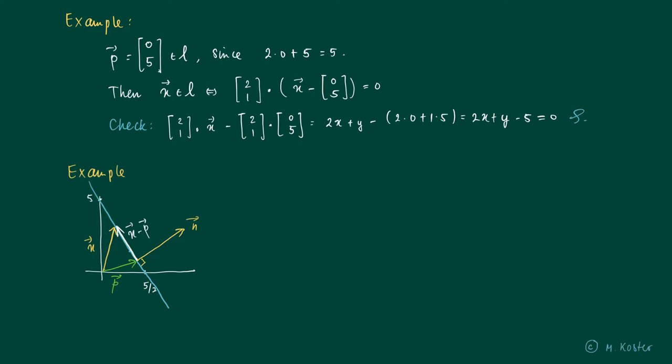Another example. Here we see an arbitrary, again the same line, an arbitrary vector p on the line. We have the normal of the line and we have a direction vector of the line l.